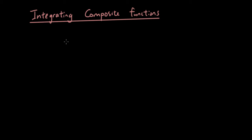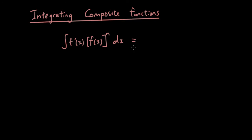Integrating composite functions. Let's have a look at the formula and I'll explain how it works. The formula is basically: if you integrate a function raised to a certain power and in front of the function you have the derivative of that function, then the integral equals f(x) raised to the power of n+1, divided by n+1, plus c. It's quite easy to remember. Let me give you a few examples.